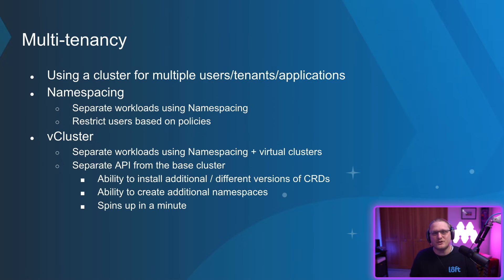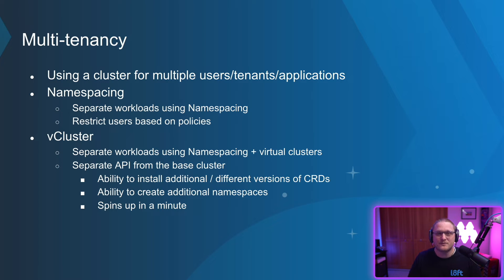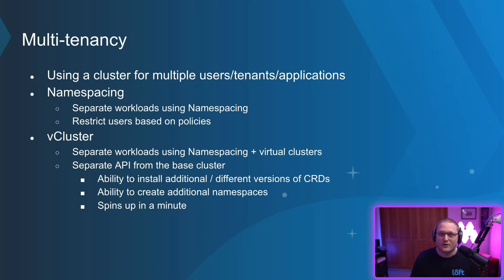Multi-tenancy is huge. Using a cluster for multiple users, tenants, and applications — taking advantage of that one cluster and doing namespacing so you can split everybody up, and then restrict users based on policies. vCluster, and obviously Loft, is one of our products that makes multi-tenancy super easy. You can separate workloads using namespaces and then go further with virtual clusters, which give you a separate API from the base cluster. You can install different versions of CRDs, create additional namespaces, and it spins up in a minute. Multi-tenancy is probably one of the easiest things you can do to save money in Kubernetes — it's like virtual machines on physical hardware, splitting it up and taking advantage of the fact that not everyone uses all the resources all the time. There's also sleep mode and other features to optimize even further.